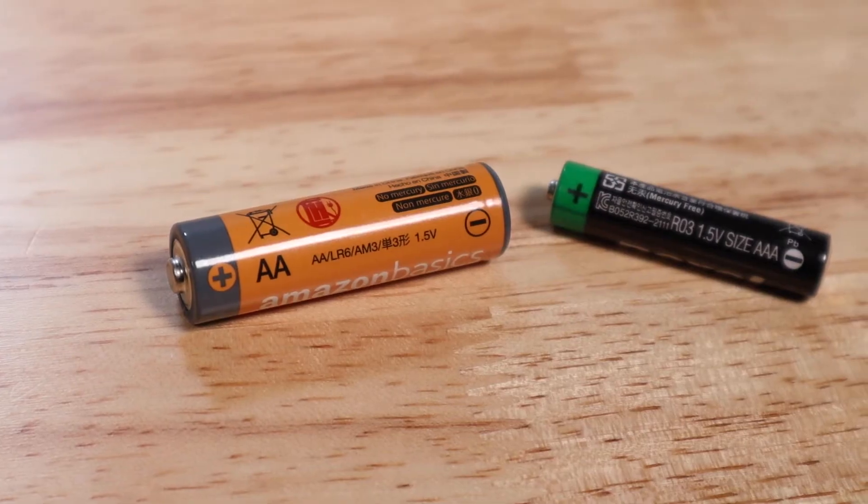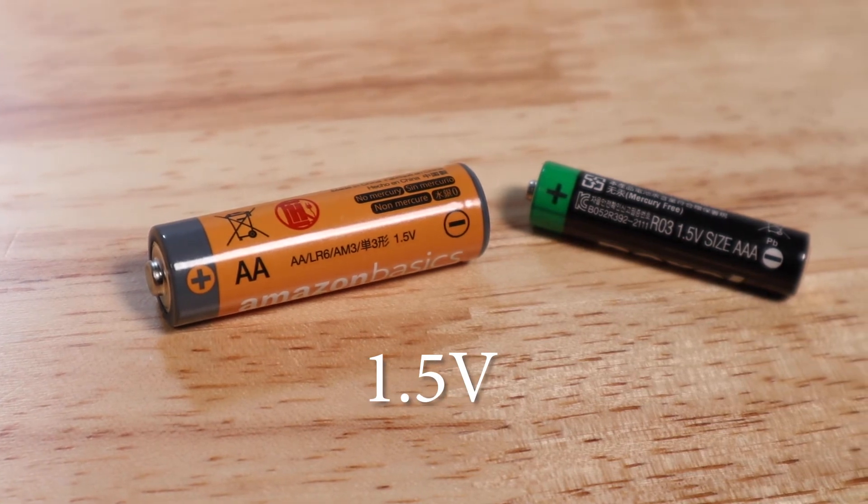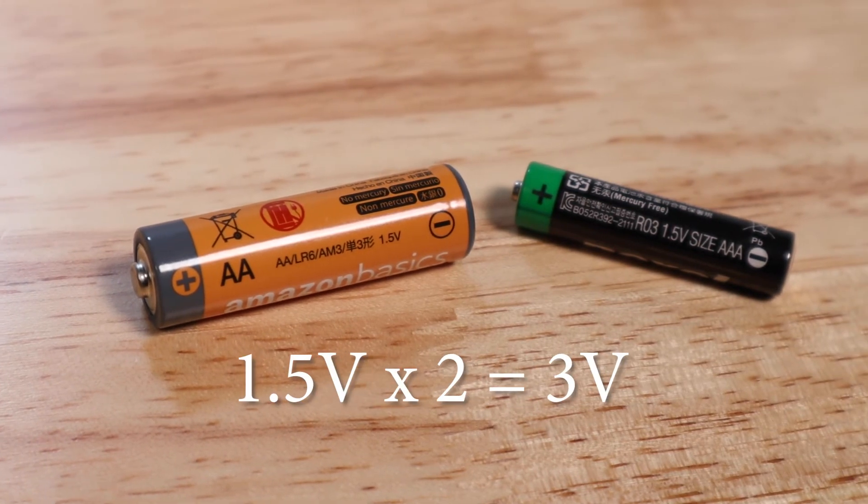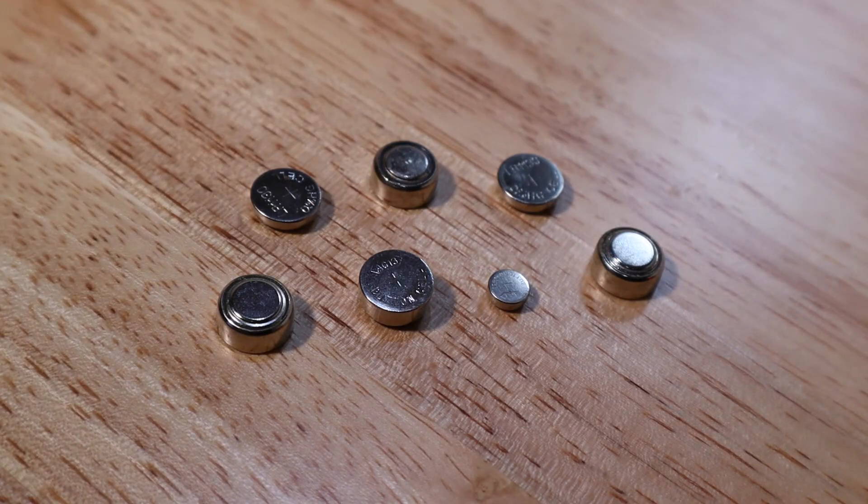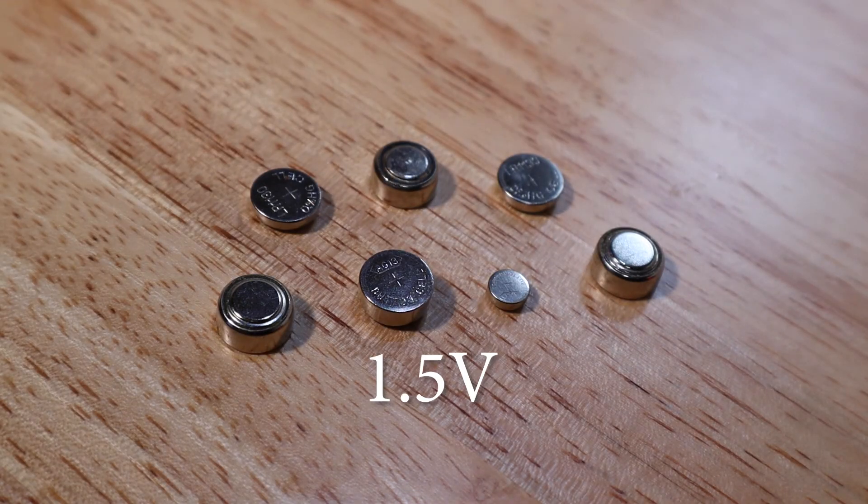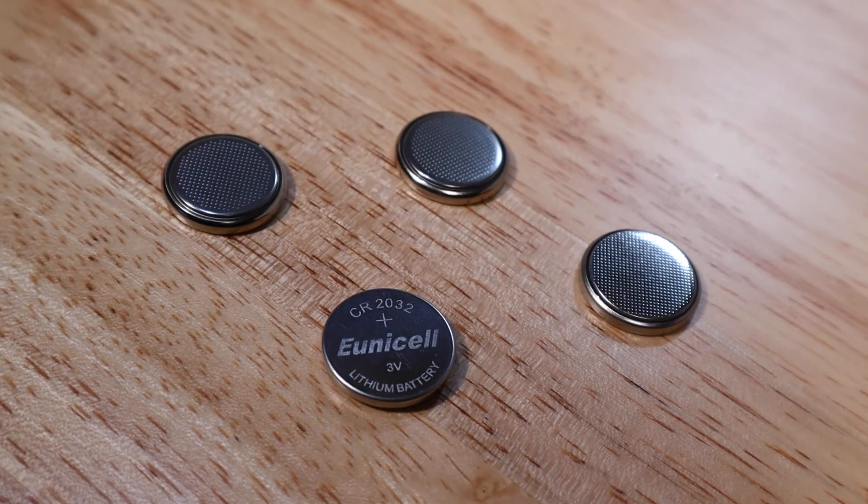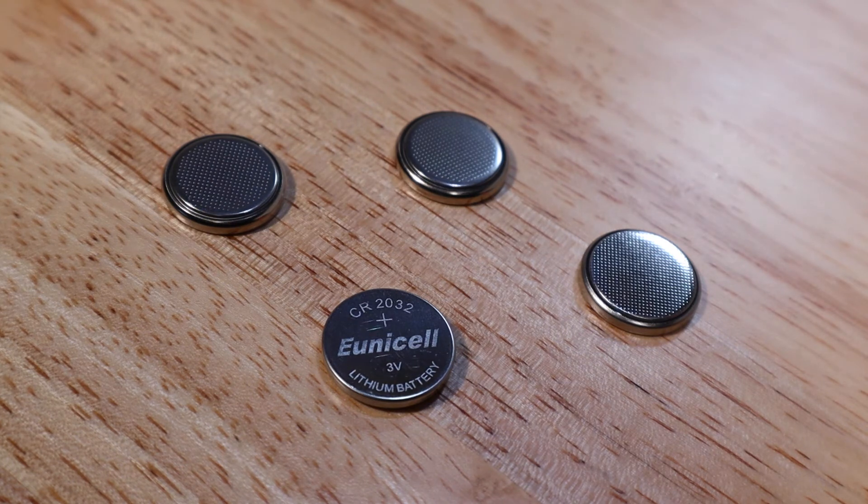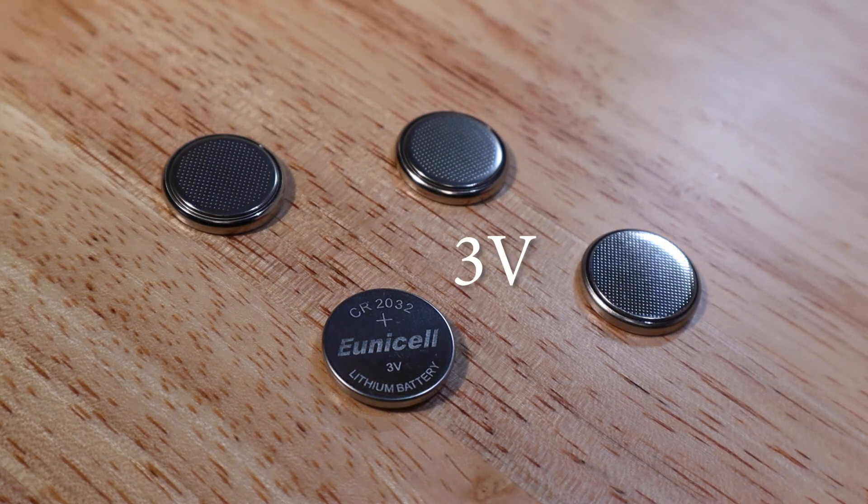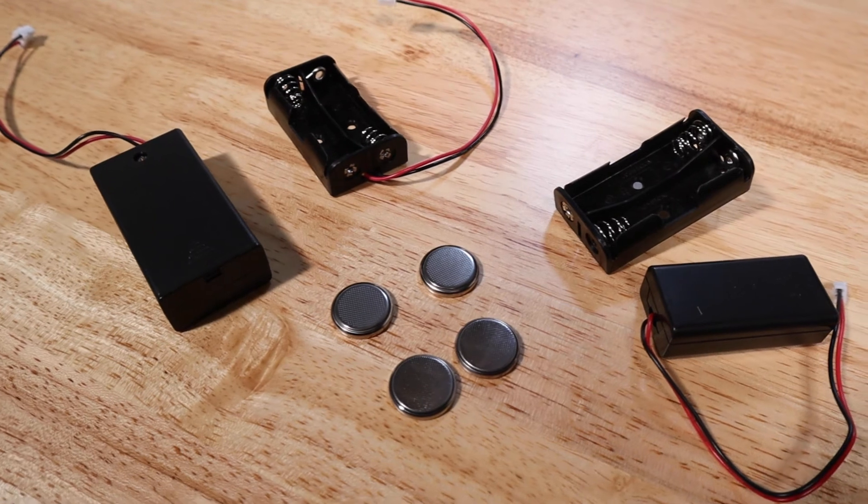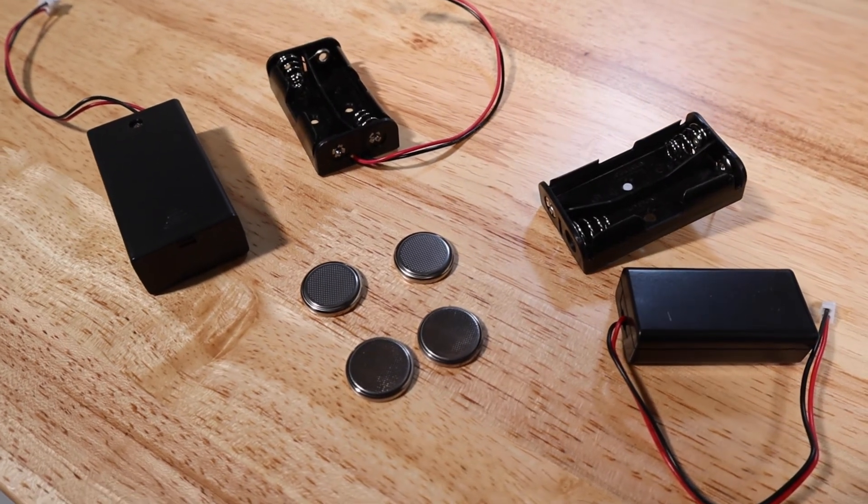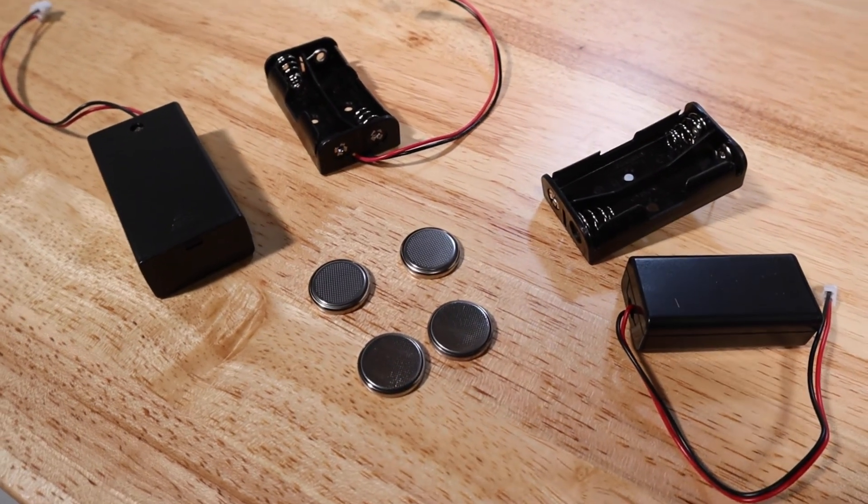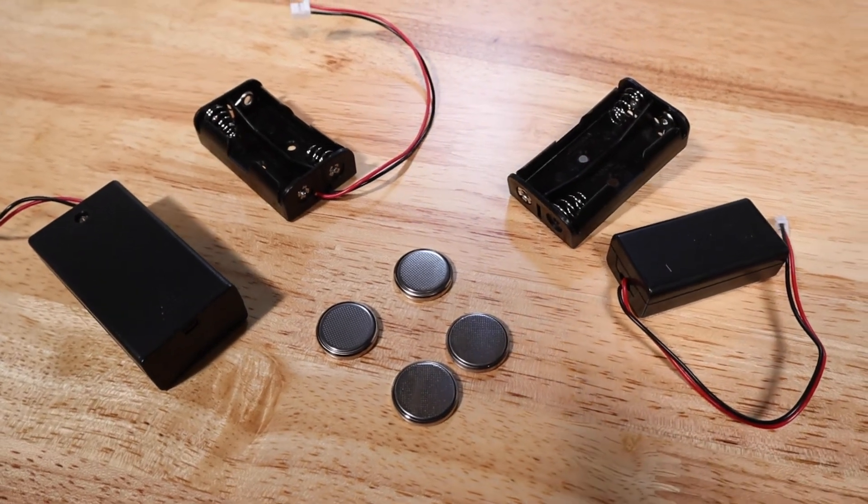Double A and triple A batteries are 1.5 volts each. Using two gives you 3 volts. While many button cell batteries are only 1.5 volts each, these CR2032 button cells that are commonly used in projects are 3 volts each. This is why battery packs with two double A or triple A batteries, or a single CR2032 battery, are often used to power LEDs.